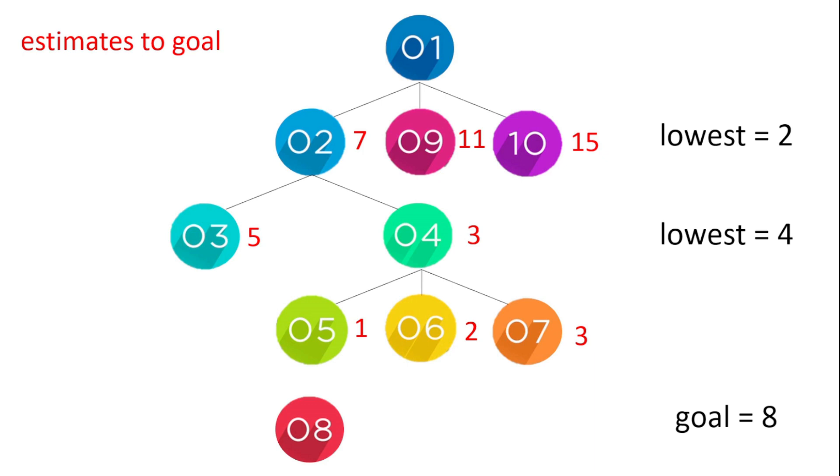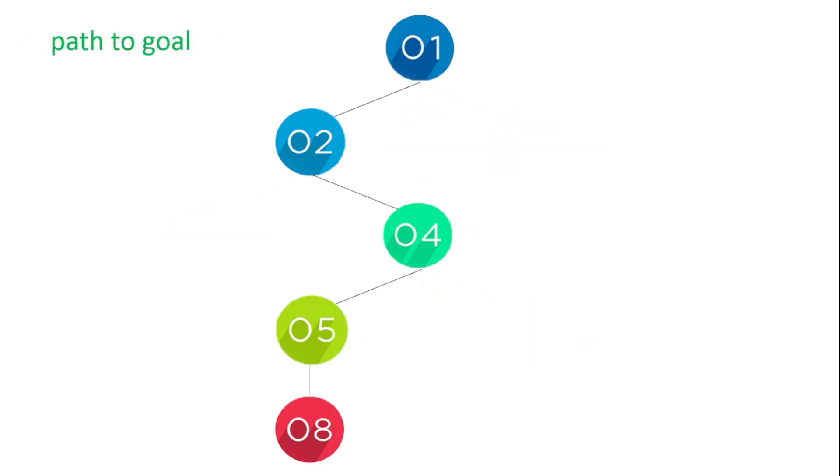So we go through node 4, and here there's three children: 5, 6, and 7. And the one with the lowest estimate, node 5, has an estimate of 1, so we go through that and we reach our goal. So that had a path to go from 1 to 2 to 4 to 5 to 8.